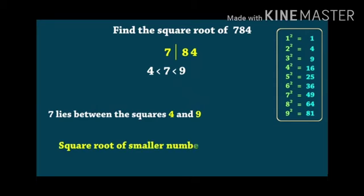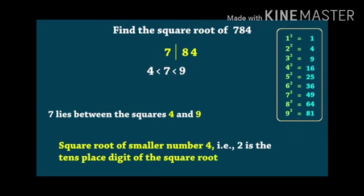The square root of the smaller number, 4, is 2. So, we will have 2 in the tens place digit of the square root. We got the tens place of the square root of 784.